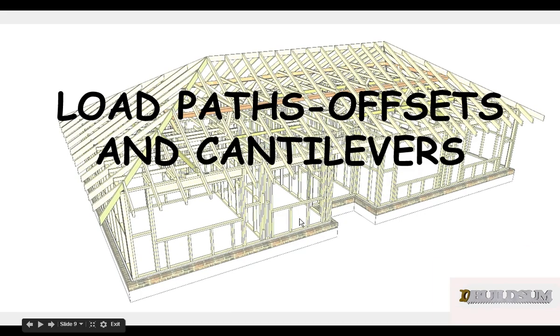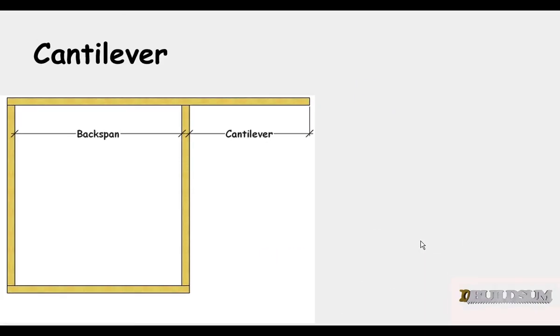We also have load paths to consider. So the code takes into consideration cantilevers. If this is a cantilever, cantilever is generally not supported on one end, it relies on the connection. Basically this connection back here and the physical strength of the member to cantilever out with no support on this end. Generally the rule is that one-third hanging out, two-thirds hanging back or two-thirds supported.